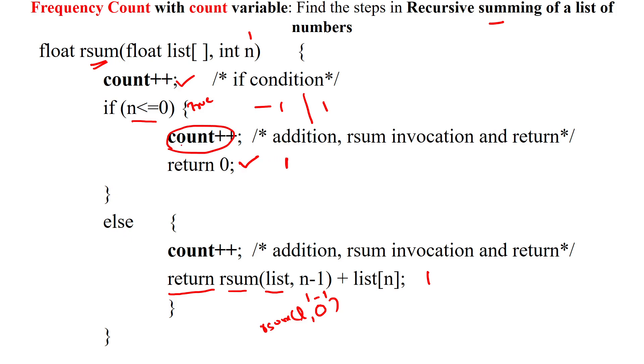So we are incrementing this count variable by 1 for this return statement. Now you calculate here, totally the if statement is executed for 2 times and these single statements are executed for 2 times. So here we can write this statement. Here you look at 2n plus 2.